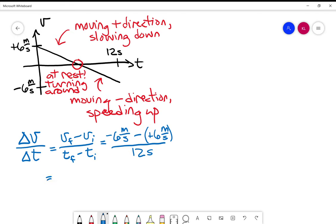This turns out to be negative six minus six, which is negative 12 meters per second, the total change in the velocity, divided by 12 seconds. So the answer here is negative one meters per second squared.